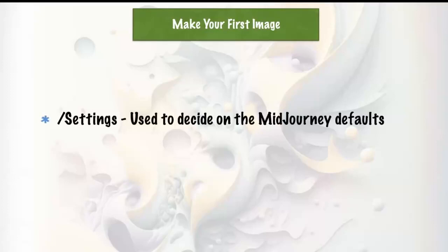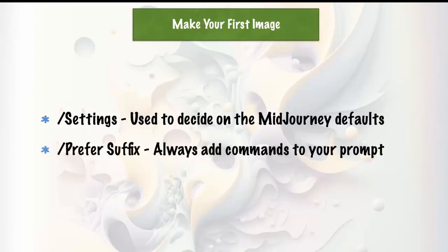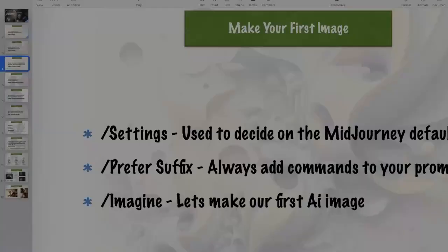To make your first image: when you've got it set up and you're in Discord, type forward-slash settings — that tells the bot to throw up options for you to click. Then there's forward-slash prefer-suffix, which lets you append options automatically. Basically you type what you want — say 'a camel in the desert' — and there are things you can add on the end: what style, what version, what rendering engine. If you use those regularly, you can use prefer-suffix so it always appends them to your prompts.